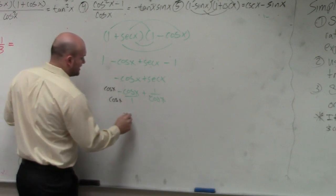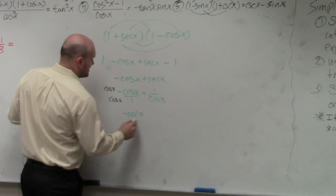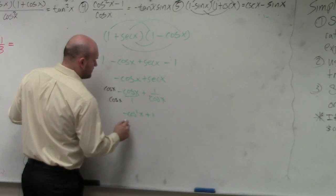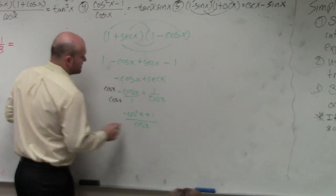Therefore, this gives me negative cosine squared of x plus 1 all over cosine of x.